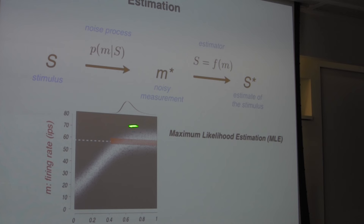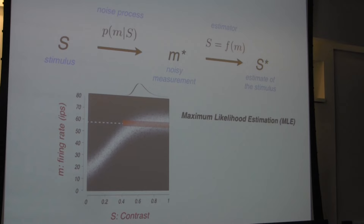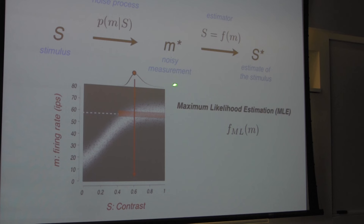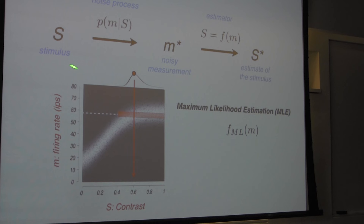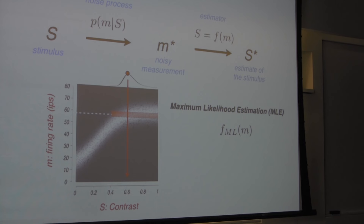Here is the first estimator I want to share with you, called the maximum likelihood estimator. What it does is, for each measurement, it figures out the likelihood of all the stimuli — this function as a function of the stimulus — and then it picks the one that is the peak of that likelihood. That's called the maximum likelihood estimate. An observer or experimenter using this strategy basically implements a function that extracts the likelihood based on the measurement and takes the peak.